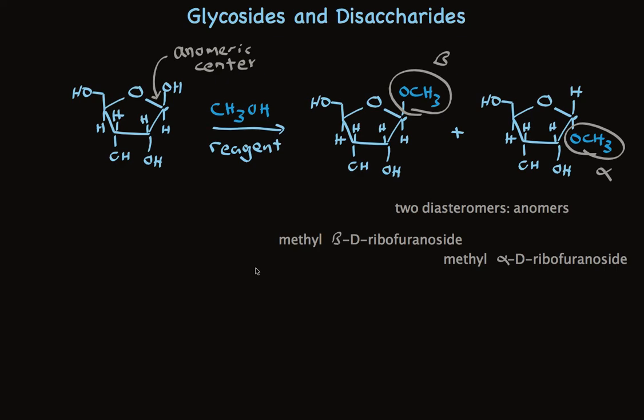And we can attach a variety of alcohols to that anomeric center. All kinds of things are known. There's one very special one that I have in mind. Has it already occurred to you? The alcohol could be a sugar. Any one of the hydroxy groups of a sugar could be used to attach that sugar to this ribose. Let me show you an example.